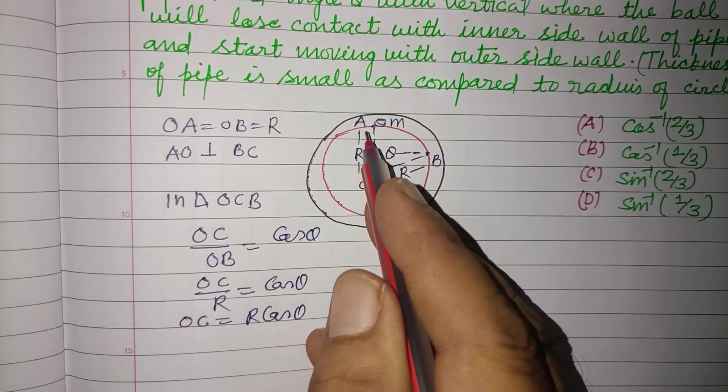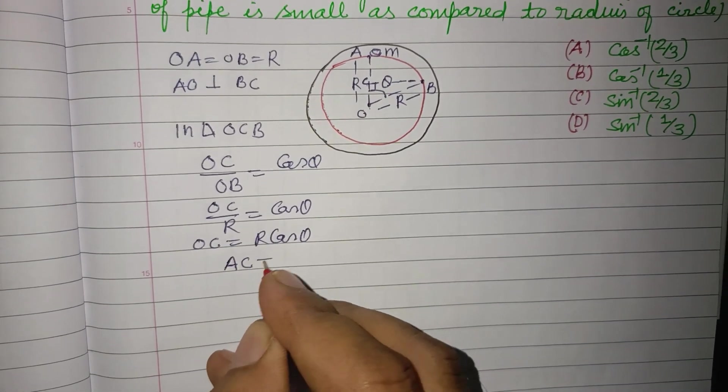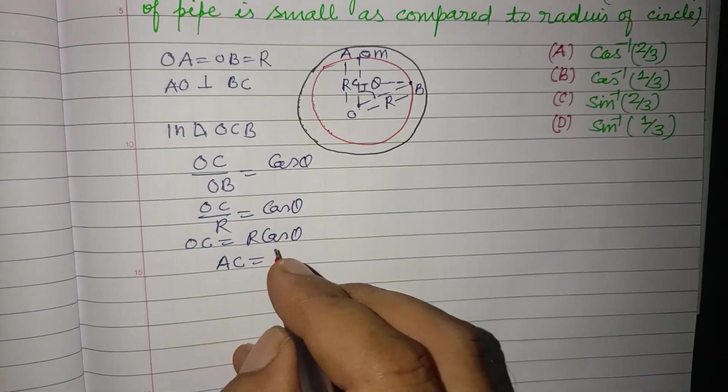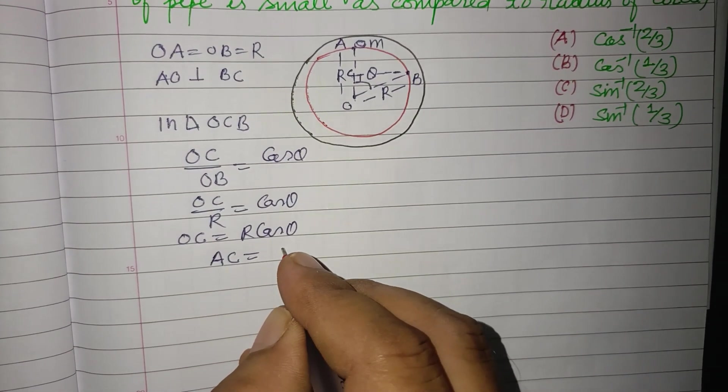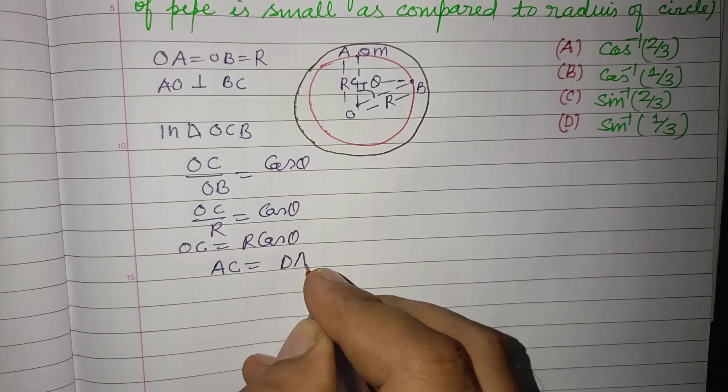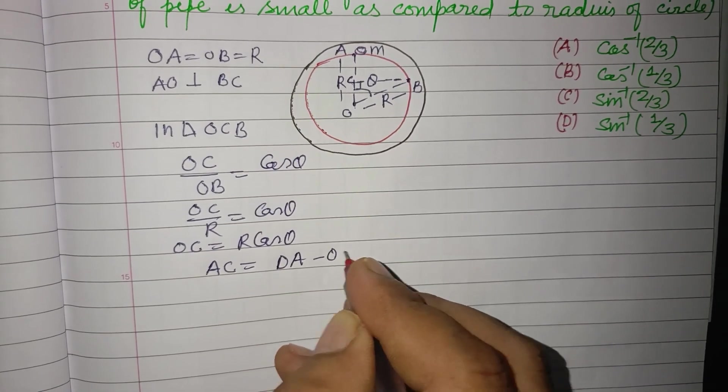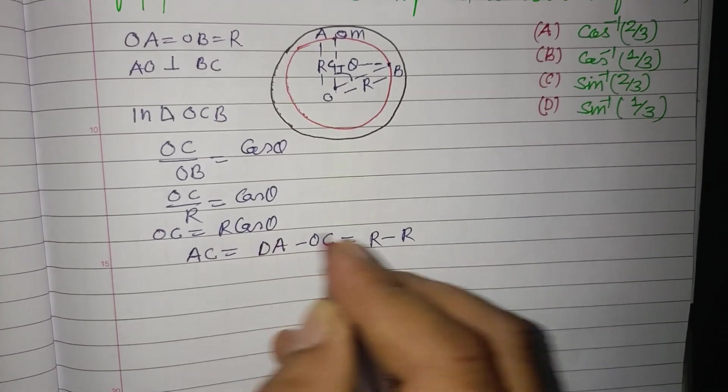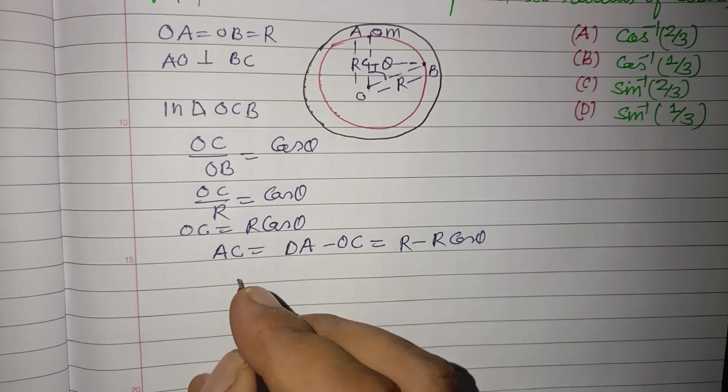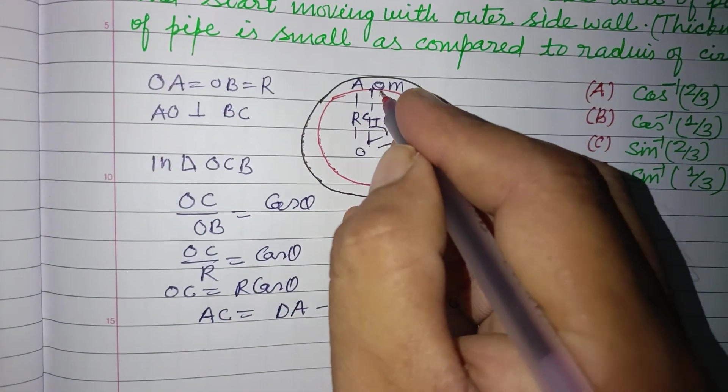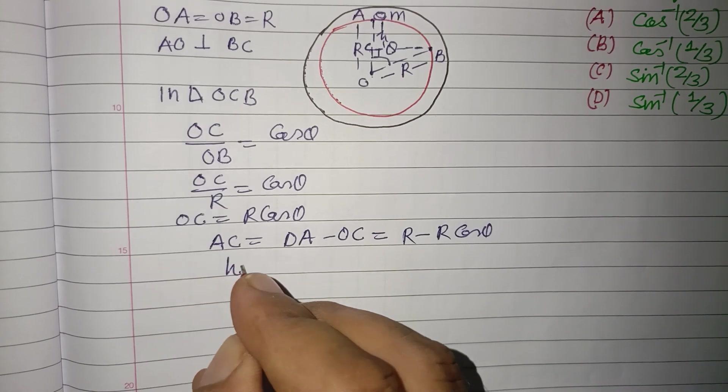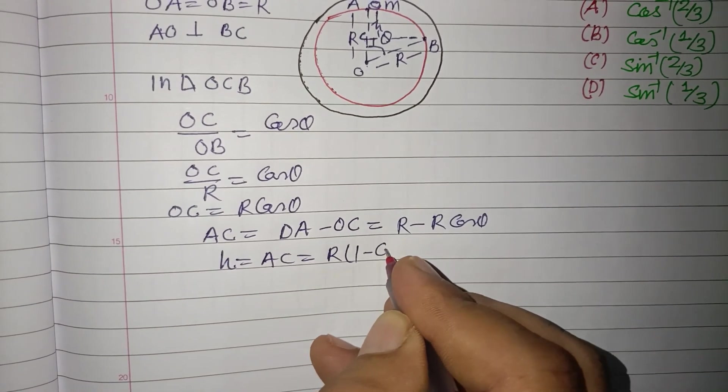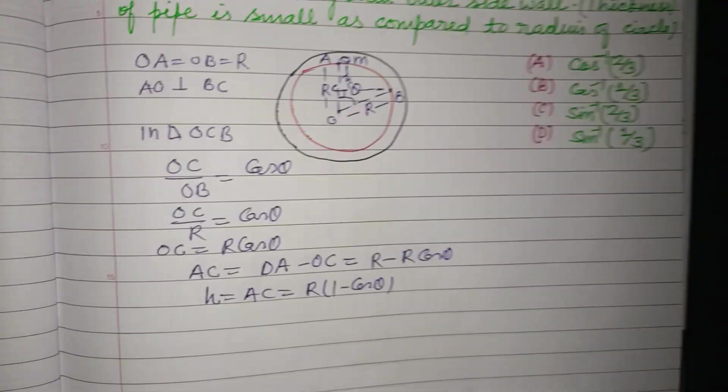Now we find AC, which is height dropped by the ball from point A to B. AC equals OA minus OC. OA is R and OC is R cos theta. AC is the height, let it be h. So h equals AC equals R times (1 minus cos theta).